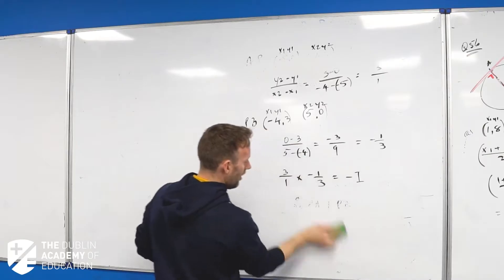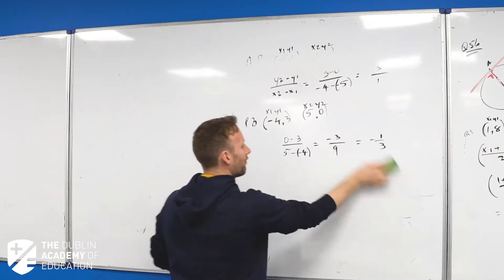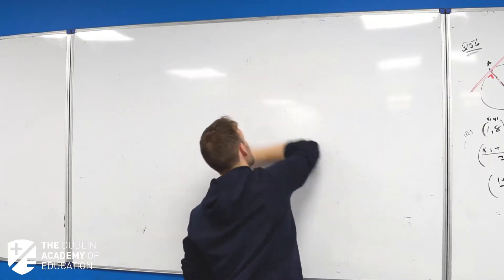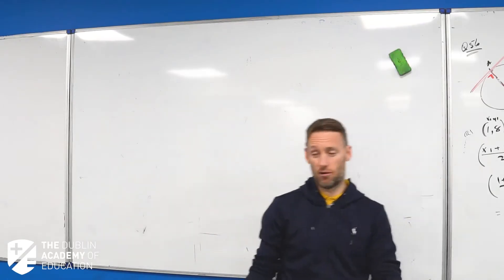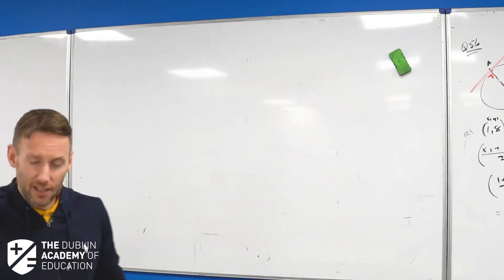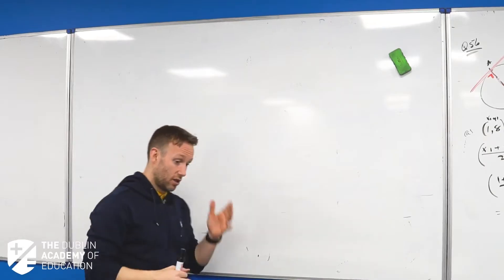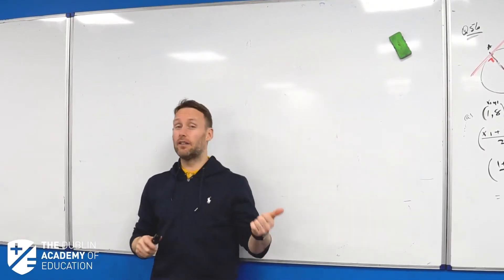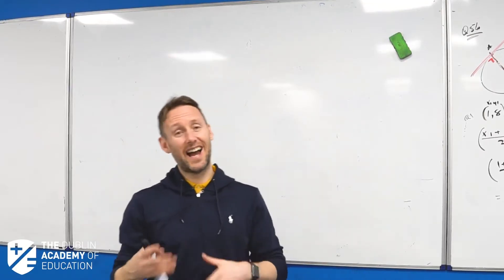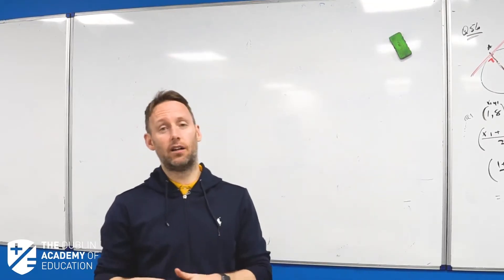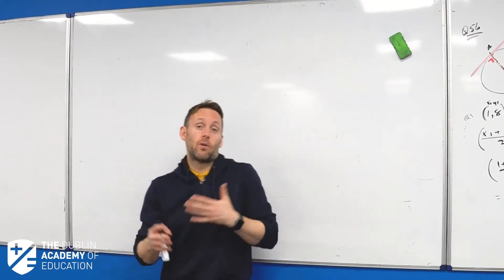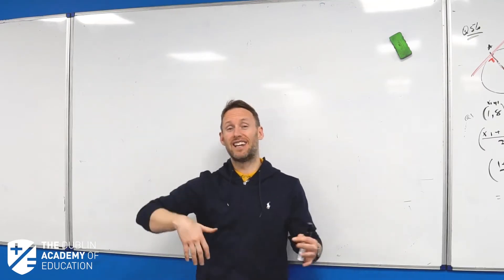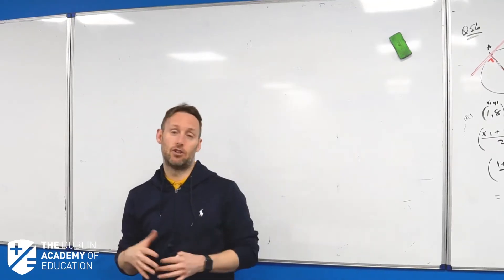If you have a strategy for trigonometry questions, you can't really go far wrong. This will always, always, always be your strategy. What you're going to be asked to find is either a side in a triangle, an angle in a triangle, or the area of a triangle. That's what the questions will generally revolve around.